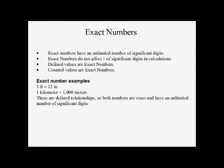Exact numbers are either defined numbers or simple counted numbers, and these have an unlimited number of significant digits, which means that they don't affect our significant digits in calculations. Defined numbers include: a foot is 12 inches, a kilometer is 1,000 meters, and 2.54 centimeters is 1 inch — all defined quantities.